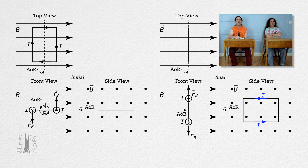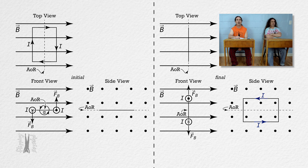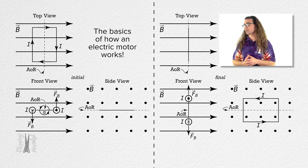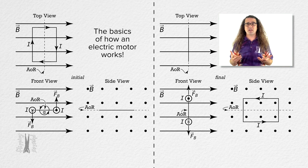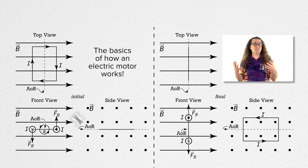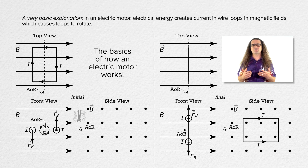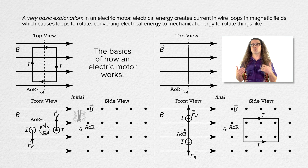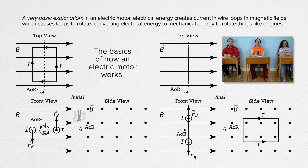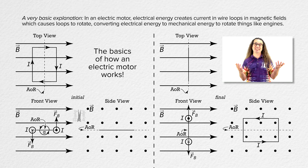This is a lot — you're just talking about current passing through a wire loop in a magnetic field, right? Where would we ever see something like this? This is the basics of how an electric motor works. There is a lot more to how electric motors work which we are not going to discuss today. However, what we have shown here is the basic concept: electrical energy is used to create current in wire loops in magnetic fields, and that causes the loops to rotate, effectively converting electrical energy to mechanical energy to rotate things like engines. That seems pretty useful. Yep, it is. Thank you for learning with me today. I enjoy learning with you.